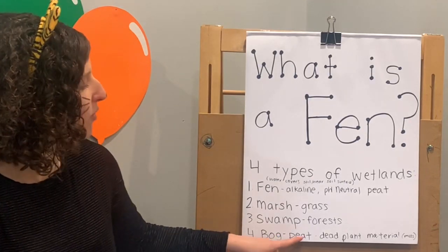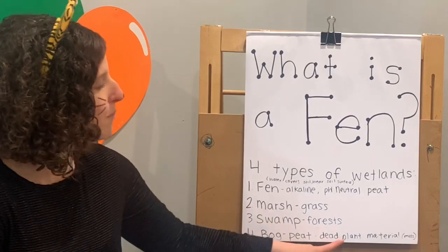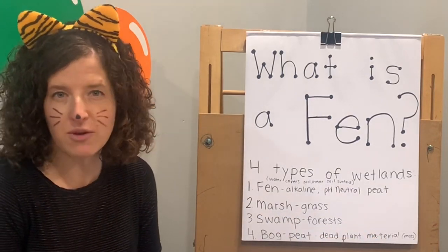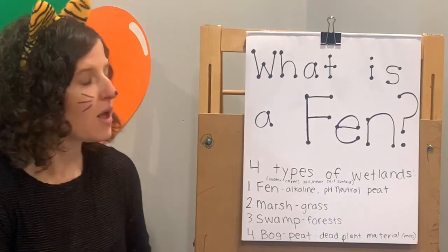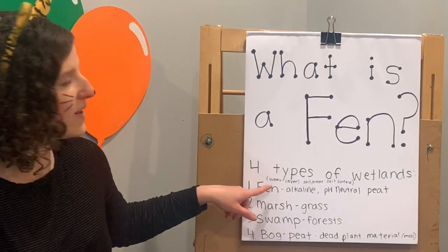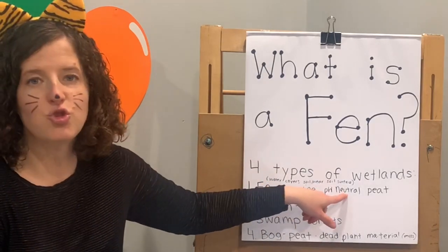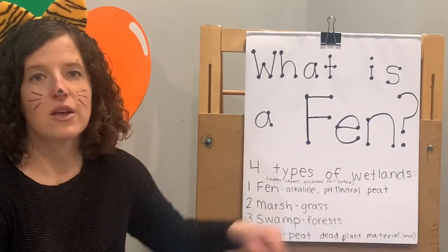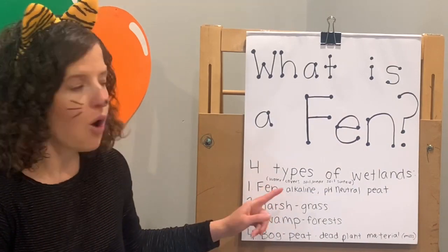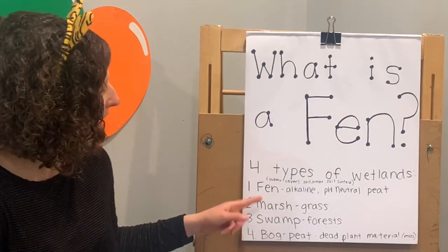A bog and a FEN are pretty similar. A bog and a FEN both have peat — P-E-A-T — that means dead plant material that's accumulated, like moss. Maybe you've heard of the word moss before. The difference between the bog and the FEN, though, is that the FEN has alkaline or pH neutral peat. That means it's not acidic — it's alkaline or pH neutral. That's the difference between a FEN and a bog.